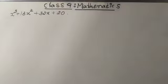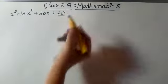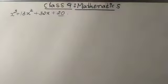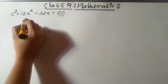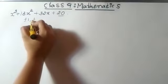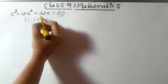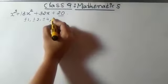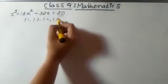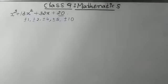As I have told, I have to look at the last term here. The last term is 20. The factors of 20 are: plus or minus 1, plus or minus 2, plus or minus 4, plus or minus 5, plus or minus 10, plus or minus 20. These are the factors of 20.